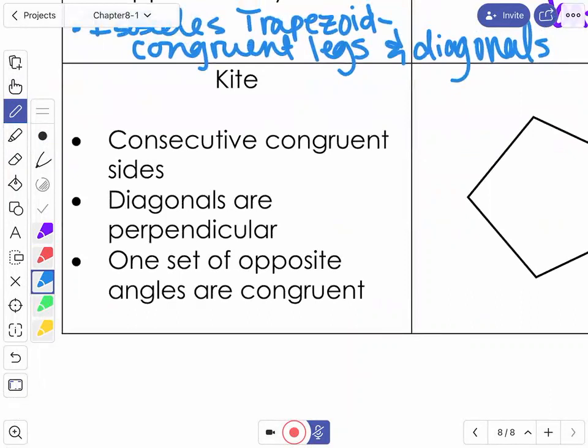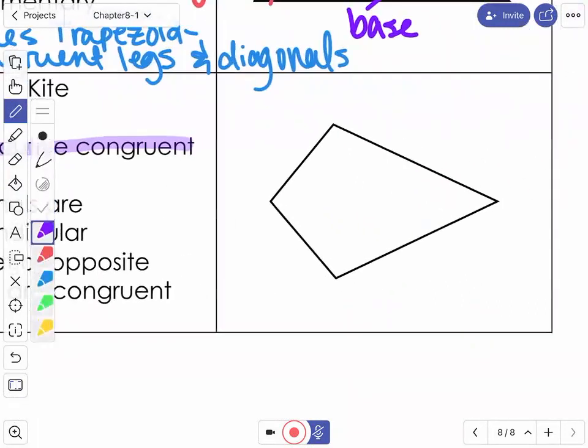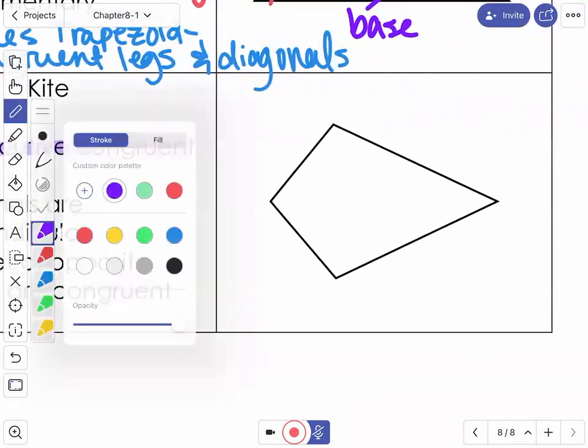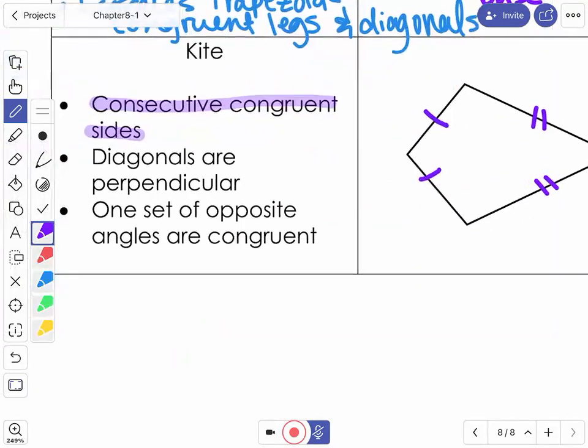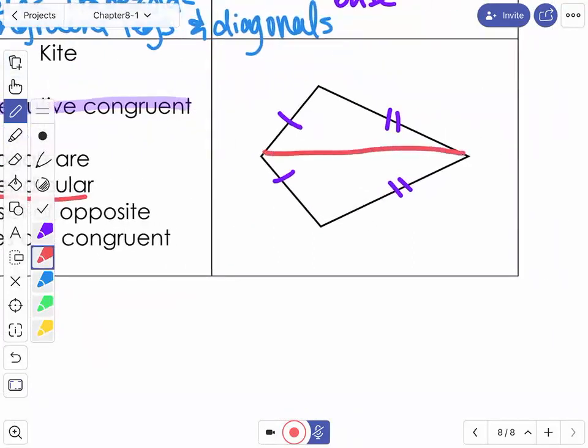All right. Then we looked at the kite. So with our kite, we have consecutive congruent sides, two pairs of those. So our two shorter sides will be congruent. Our two longer sides will be congruent. So they're no longer across from each other. They are next to each other connected. Our diagonals are perpendicular.